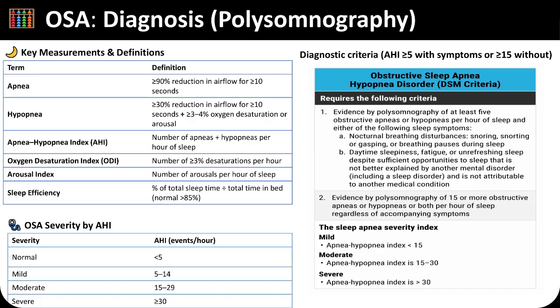Polysomnography defines OSA through key parameters including apnea, hypopnea, and the apnea-hypopnea index. Apnea refers to a 90% or greater reduction in airflow for at least 10 seconds, while hypopnea involves a 30% reduction in airflow for at least 10 seconds, accompanied by a 3 to 4% oxygen desaturation or arousal. The apnea-hypopnea index quantifies events per hour of sleep: mild for 5 to 14 events, moderate for 15 to 29, and severe for 30 or more. Diagnosis requires an AHI of at least 5 with symptoms, or an AHI of 15 or more regardless of symptoms.